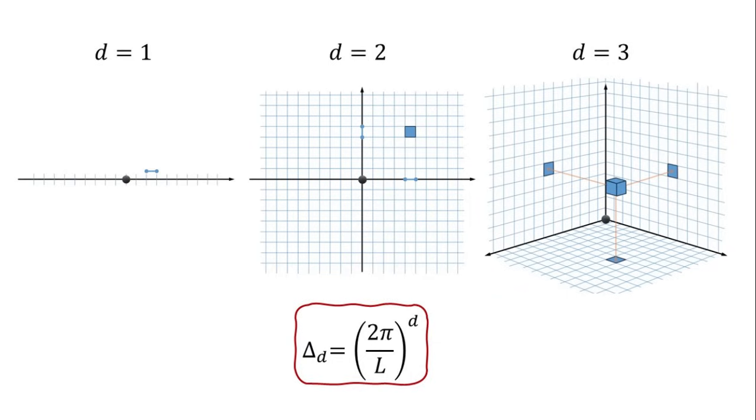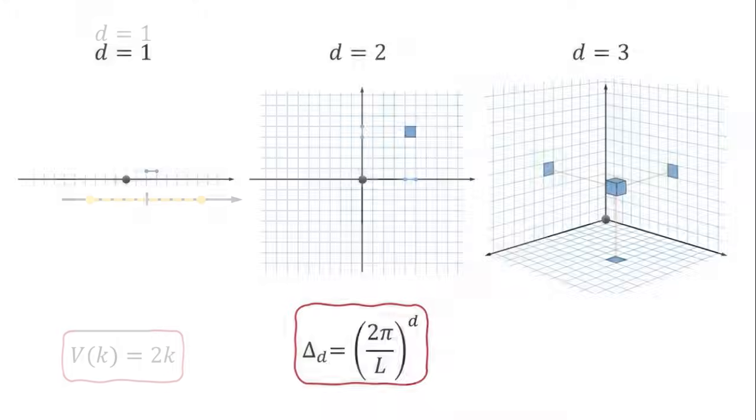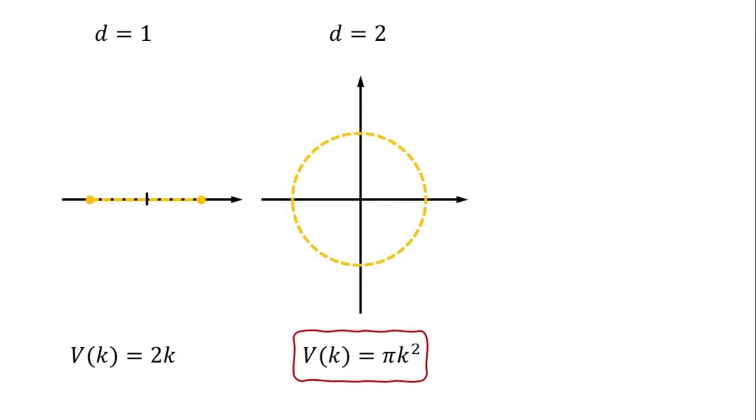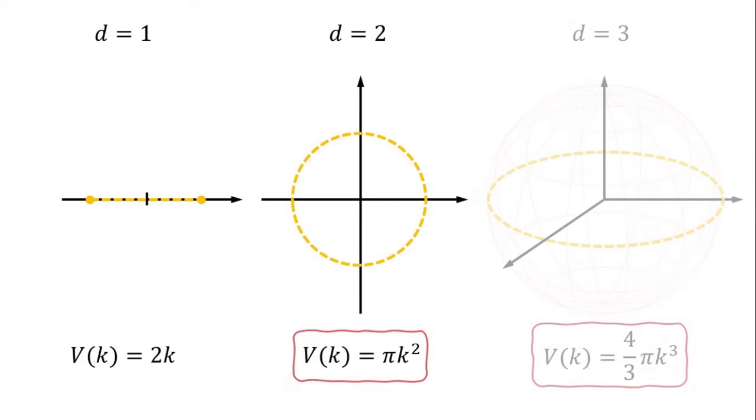Here we use the term volume in a generalized sense to refer to the d-dimensional space. Let's consider our discussion in the k-space. For d equals to 1, the volume encompassing all wave vectors up to k is simply the length 2 times k. For d equals to 2, the volume encompassing all wave vectors up to k is the area of a circle with radius k. For d equals to 3, the volume encompassing all wave vectors up to k is the actual volume of a sphere with radius k.